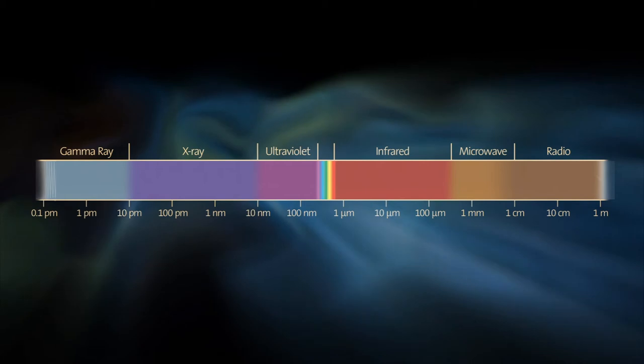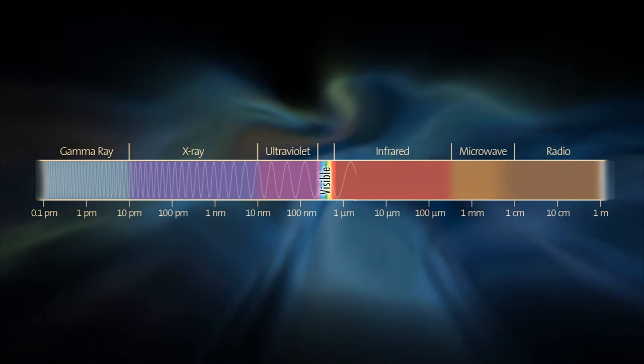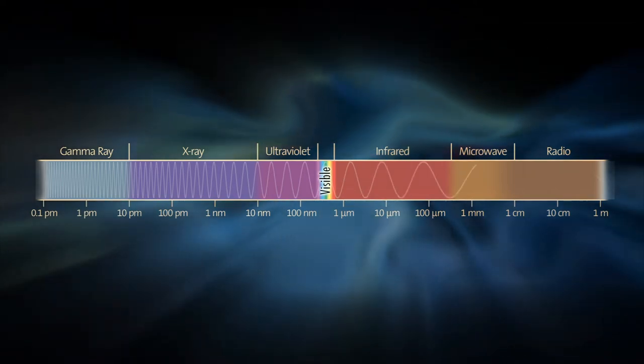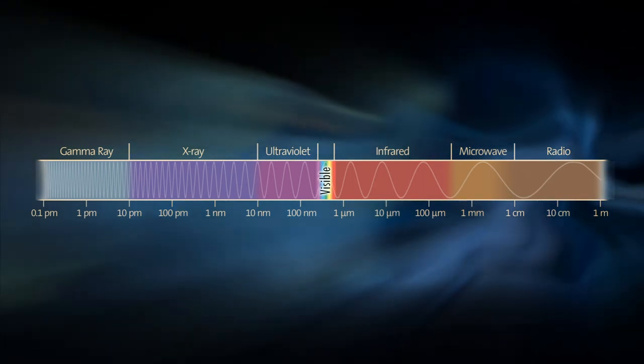Each and every part of the spectrum has its own story to tell. At millimeter and sub-millimeter wavelengths, astronomers study the formation of galaxies in the early universe and the origin of stars and planets in our own Milky Way.